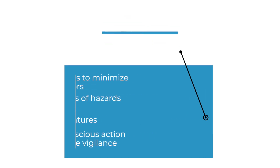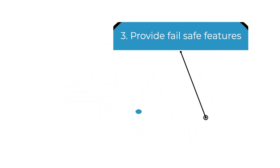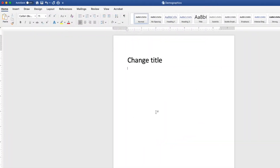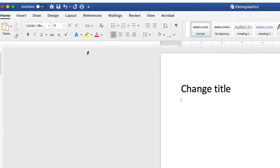Third, provide failsafe features. Mistakes and accidents do happen, even when people try their best to avoid them. However, by providing failsafe features, these mistakes can be remedied. For example, the undo feature of many computer programs is a way to bring back something that may have accidentally been deleted and should not have been.